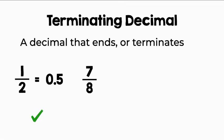Is seven-eighths a terminating decimal? Seven divided by eight equals 0.875. Therefore, seven-eighths in decimal form is a terminating decimal.